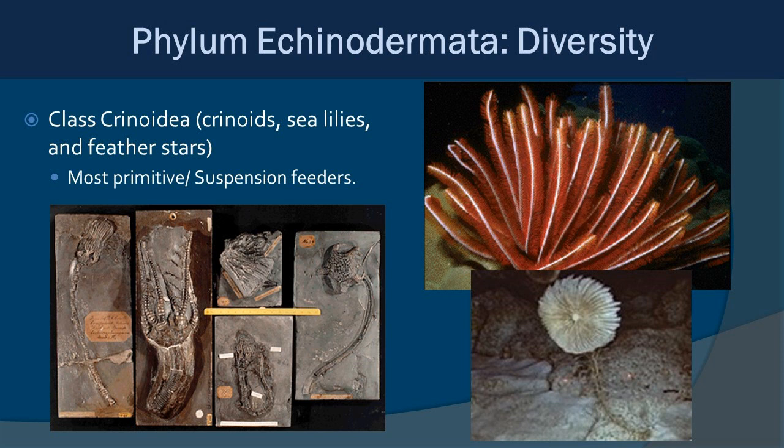Class Crinoidea is interesting because many were thought to be extinct until living stalked crinoids were discovered in the deep sea — the fossils were found long before the living specimens. We also have sea lilies and feather stars, which you'll find on coral reefs. They are primarily suspension feeders, filter feeding continuously.